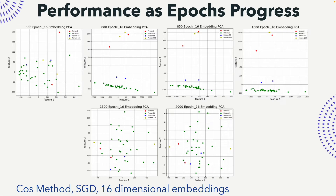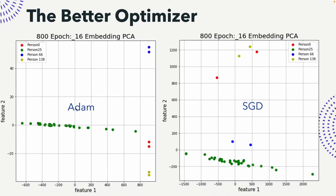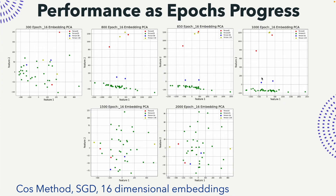As epochs progress, we wanted to see how well the model does in terms of embeddings. Using SGD with 16-dimensional embeddings — the ResNet model gives an output of 16 dimensions via added dense layers — initially the results are not great, but after about 800 epochs it does a good job of intra-class compactness and inter-class separation. Beyond that, the model starts doing a worse job, suggesting SGD may not be the best optimizer here.